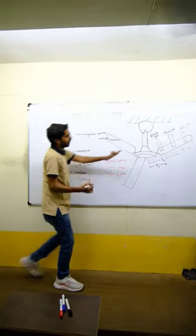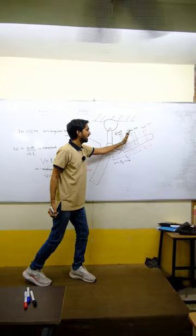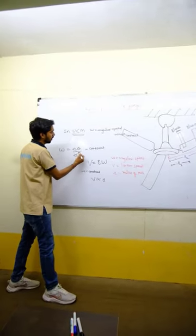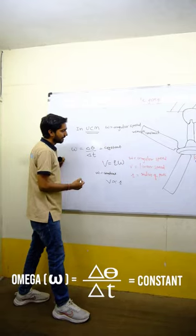Here, our fan's wings will be at different angles. So, there is a circular motion here. So, if we consider omega constant.